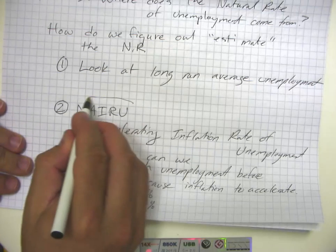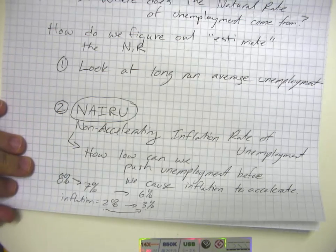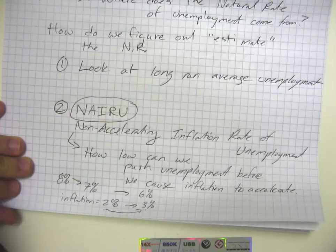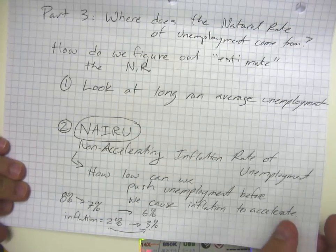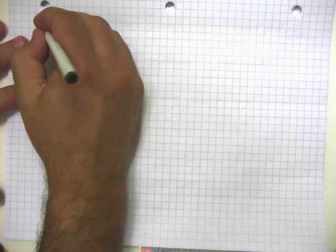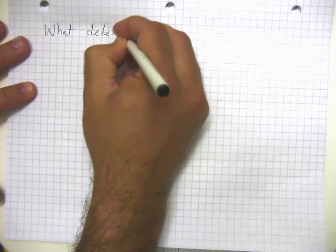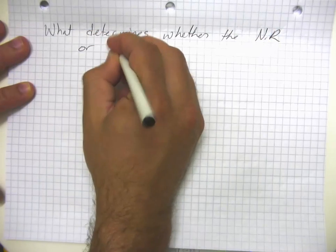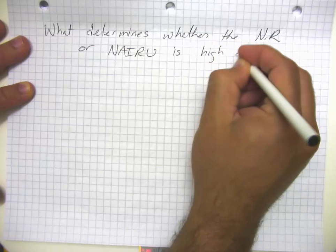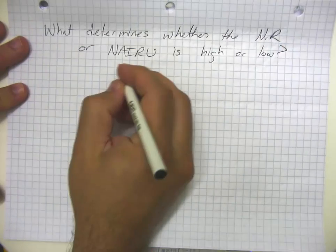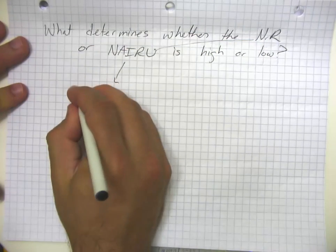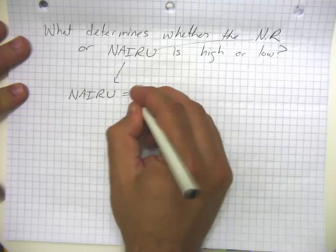I personally prefer thinking about unemployment in terms of the NAIRU, but for most purposes the difference between the NAIRU and the natural rate of unemployment is pretty small, so either one will do, and I might occasionally use those two terms interchangeably. The second question is: what determines whether the natural rate or NAIRU is high or low? We can think of the NAIRU or natural rate as made up of two types of unemployment.